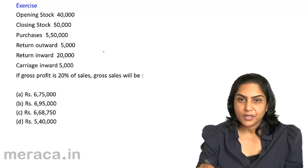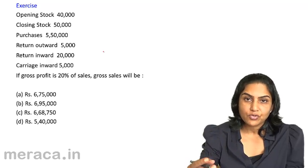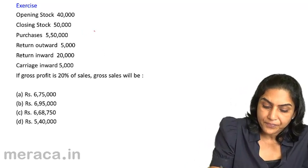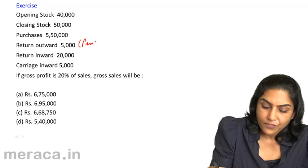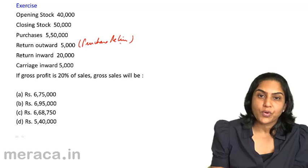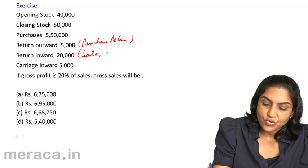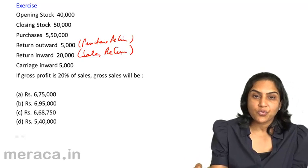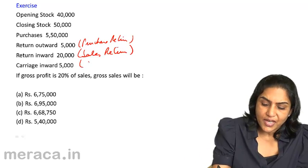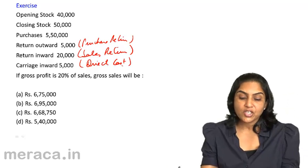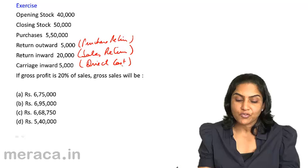Return outward, that means goods are moving out, so purchase return is 5,000. Return inward is nothing but sales return is 20,000. Carriage inward is 5,000, which is an example of a direct cost. Gross profit is 20% of sales.